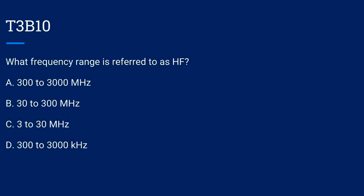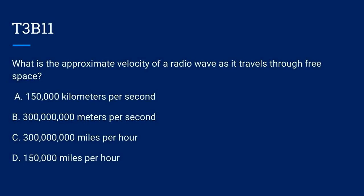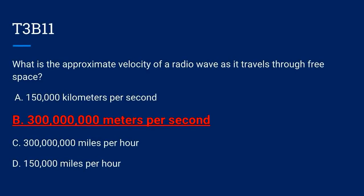T3B10. What frequency range is referred to as HF? A. 300 to 3000 megahertz. B. 30 to 300 megahertz. C. 3 to 30 megahertz. Or D. 300 to 3000 kilohertz. The correct answer is C: 3 to 30 megahertz. T3B11. What is the approximate velocity of a radio wave as it travels through free space? A. 150,000 kilometers per second. B. 300 million meters per second. C. 300 million miles per hour. Or D. 150,000 miles per hour. Correct answer is B: 300 million meters per second.